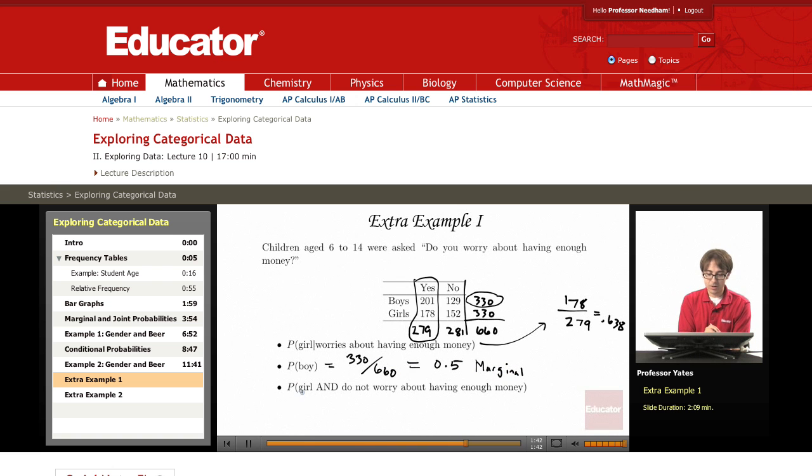What's the probability that they're a girl and they do not worry about having enough money? So that row represents the girls. This column represents not worrying about having enough money. That overlap is 152.